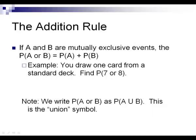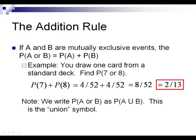The addition rule means that when you have mutually exclusive events, the probability of A or B occurring is the probability of A plus the probability of B. For example, the probability of drawing a 7 or an 8 from a deck of cards would be the probability of drawing a 7 plus the probability of drawing an 8. There are 4 out of 52 sevens and 4 out of 52 eights. Adding those gives 8 out of 52, which reduces to 2 out of 13.